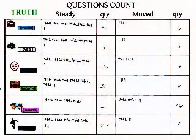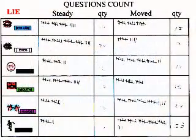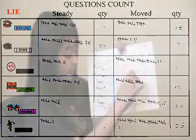I did tally marks for truth and for lie. I used tally marks to show how much they moved and how steady they were. I also did it with a line. I used tiny marks to show my quantity — how much they were steady and how much they moved.